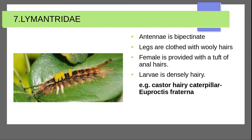Next moth family is Lymantriidae. Characteristic features: antennae are bipectinate; legs are clothed with woolly hair. Female is provided with a tuft of anal hairs. Larva is densely hairy — the caterpillar is hairy. Example: Euproctis fraterna.